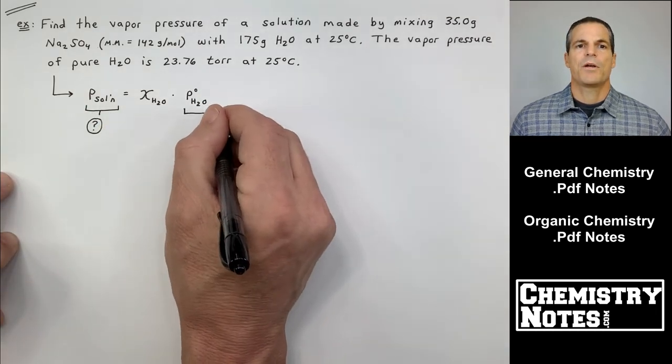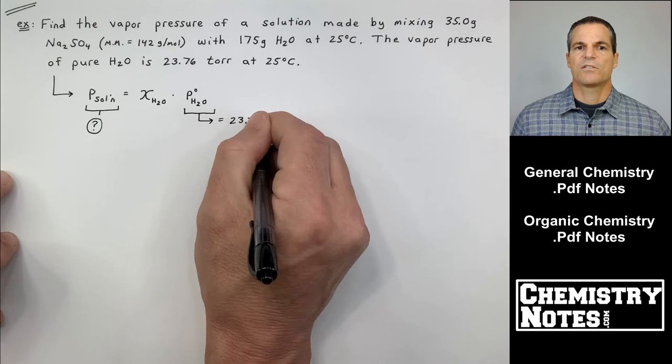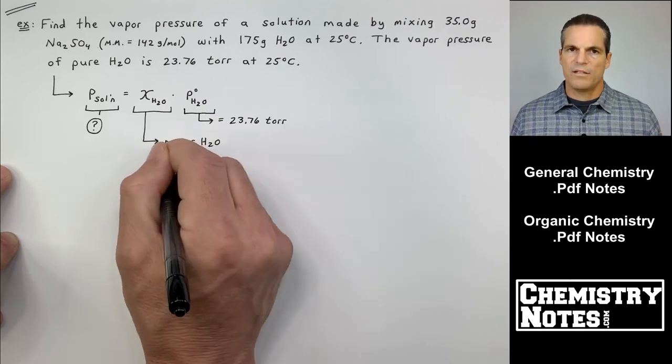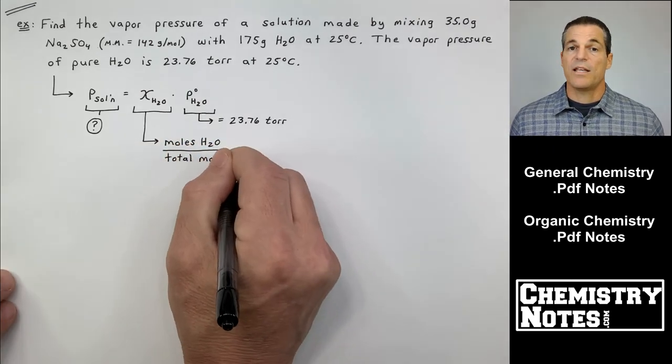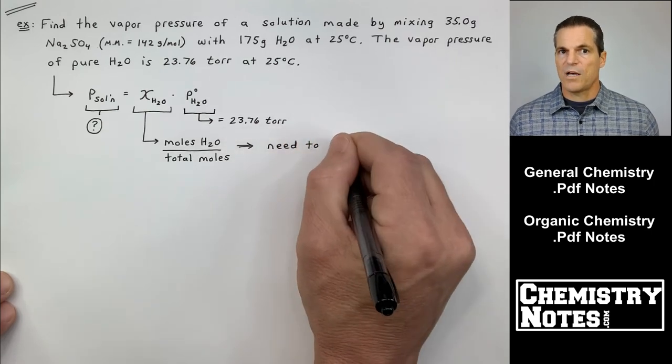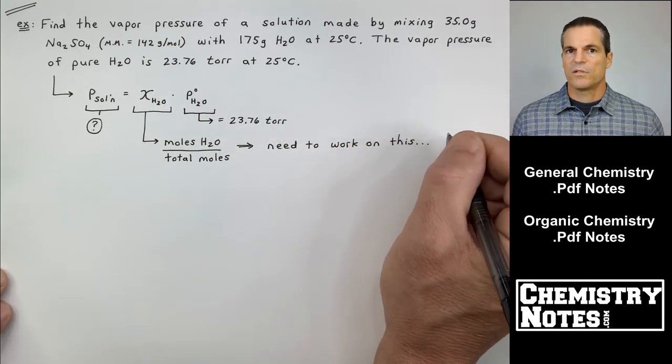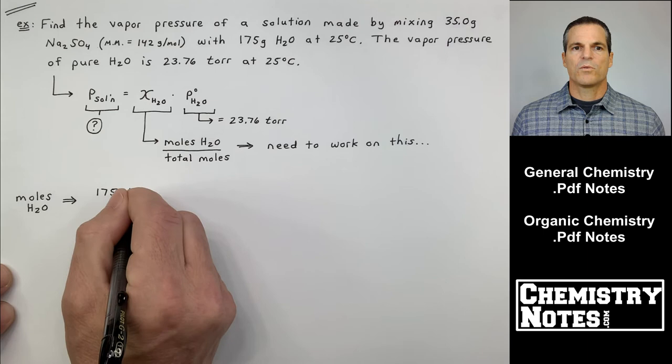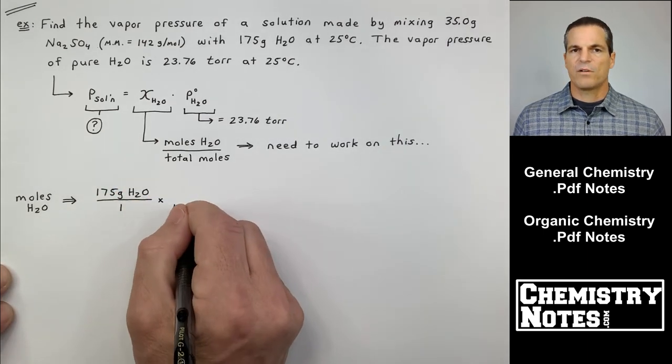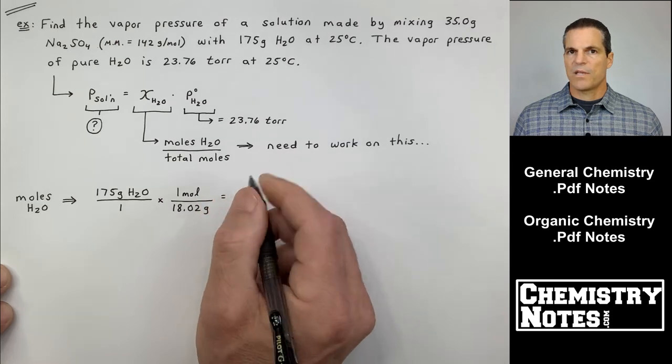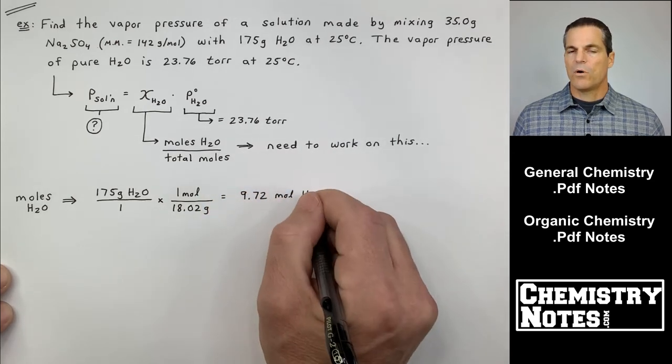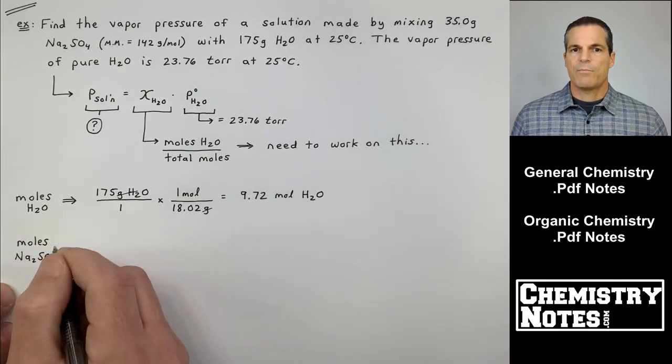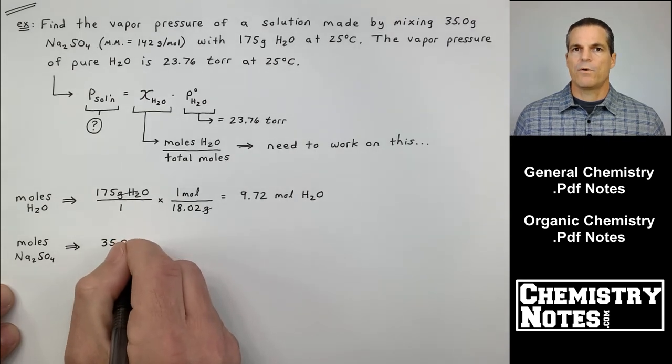It is vapor pressure of pure water, 23.76 torr. You see how I write it all down and I map it out. It helps me visualize where I'm going, what I need to do. So I've broken down mole fraction into what it is, which is numerator over denominator, moles of water divided by total moles. So that's what I have to work on first. This is just like the last problem. The moles of water, 175 grams of water, I convert that to moles in one step. Start with what I'm given, put it over one, go from grams to moles using the periodic table, molar mass of water, 18.02. That's 9.72 moles of H2O. That's my numerator for mole fraction. Moles Na2SO4, same idea.